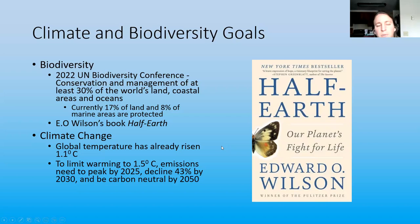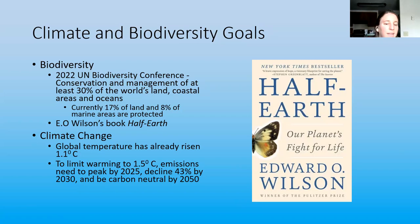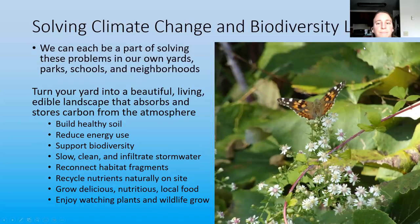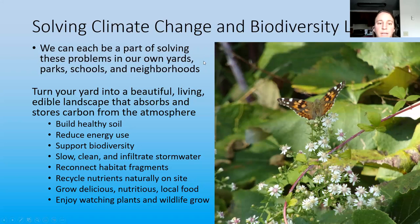For climate change, the global temperature has already risen about 1.1 degrees Celsius. To limit warming to 1.5 degrees and stop the worst impacts, we need to be carbon neutral by 2050, have emissions peak by 2025, and decline 43% by 2030. Our landscapes can be part of solving these problems — at home in our own yards we can start doing what we can for biodiversity, absorbing carbon, reducing energy use, and also in local parks, schools, and neighborhoods.